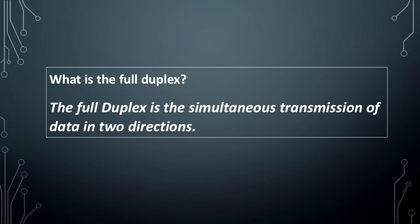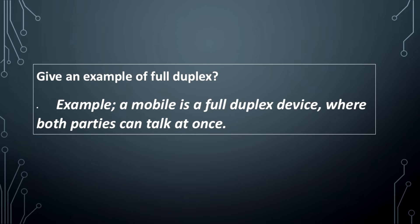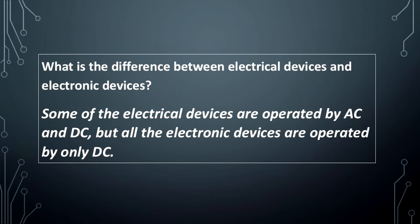What is the full duplex? The full duplex is the simultaneous transmission of data in two directions. Give an example of full duplex. Example: A mobile is a full duplex device where both parties can talk at once.